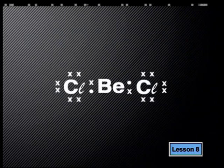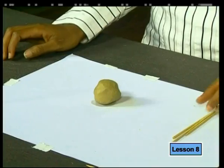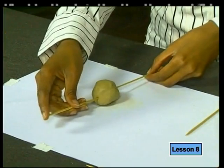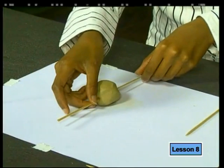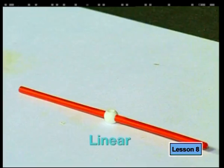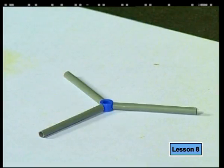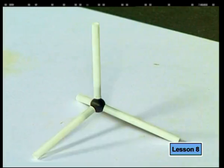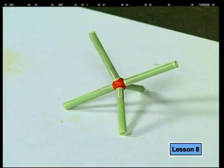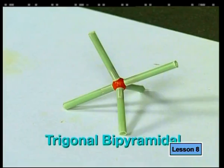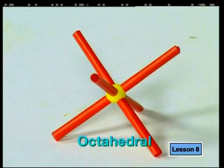Now that we have determined the five basic molecular shapes, let's review the steps when applying the VSEPR model. First, draw a Lewis diagram of the molecule. Next, count the number of pairs of electrons around the central atom. Then determine the shape, applying the idea that electron pairs must always be as far away from each other as possible. Two pairs: linear. Three pairs: trigonal planar. Four pairs: tetrahedral. Five pairs: trigonal bipyramidal. Six pairs: octahedral.